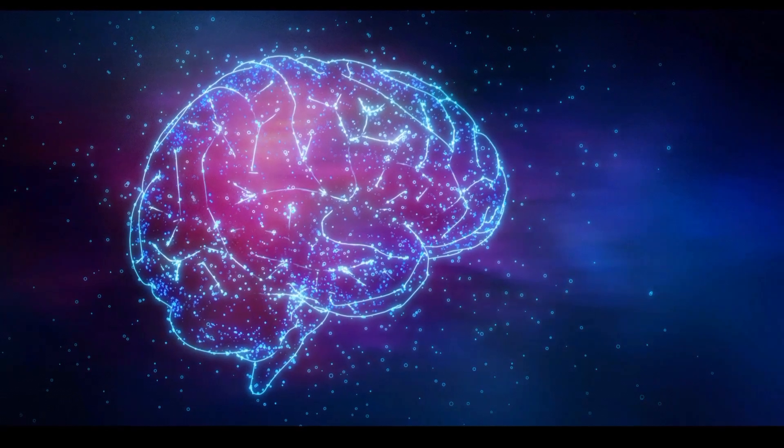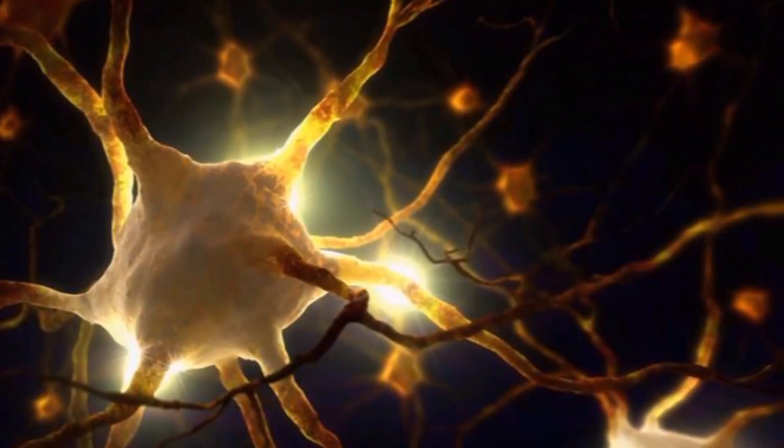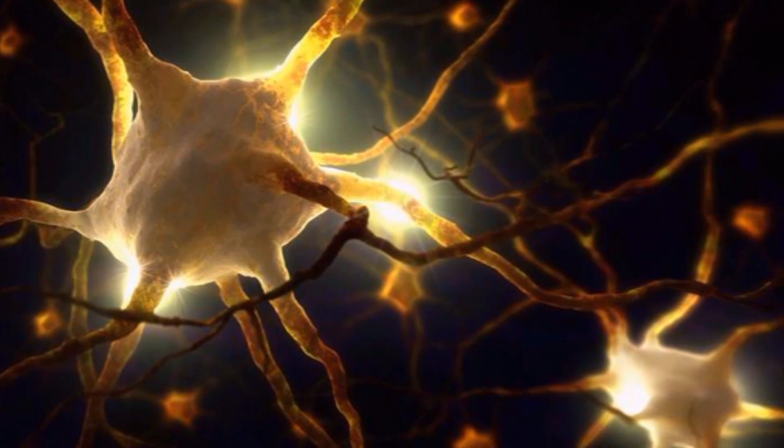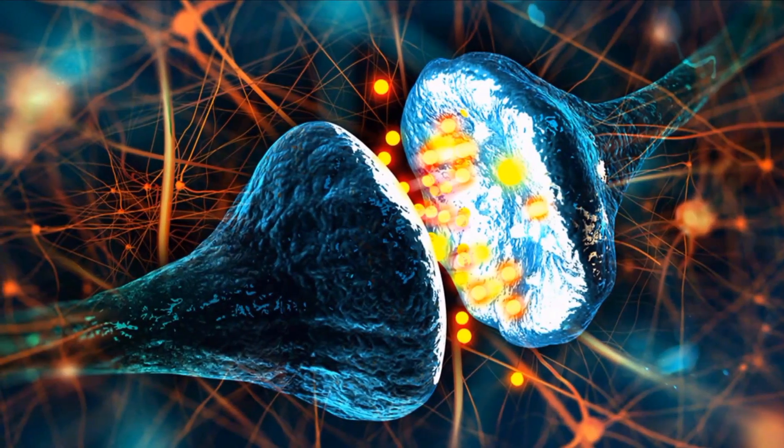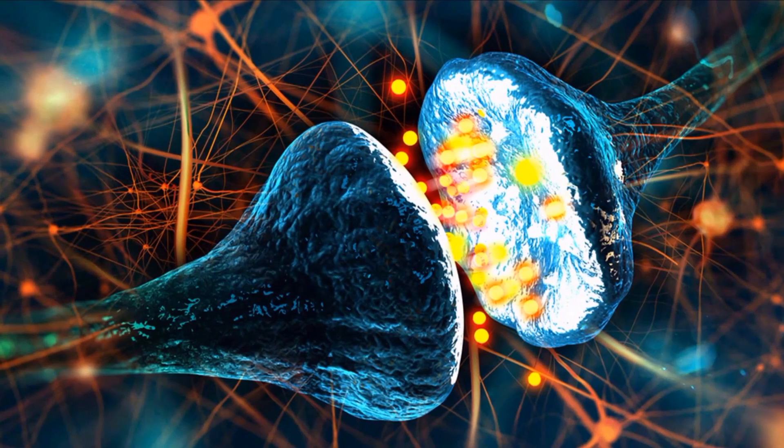Scientists have found that neurons in mammalian brains are capable of producing photons of light, or biophotons. The photons appear within the visible spectrum, ranging from near-infrared through violet, or between 200 and 1,300 nanometers.